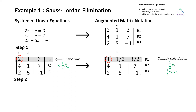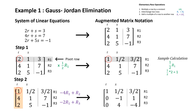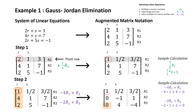Next, we must transform the matrix to obtain a zero for every other entry in the column. This will be done by adding a multiple of the pivot row to another row. And this operation leads to the matrix on the right.